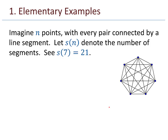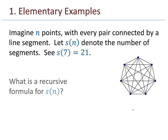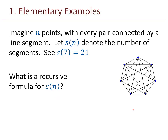Here's another example. Imagine n points where every pair is connected by a line segment — that's called a complete graph on n vertices. Let s denote the number of segments. For example, in this picture, s of 7 is 21. There are 21 line segments there. What is a recursive formula for s of n?